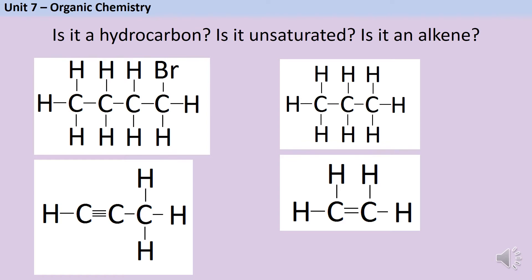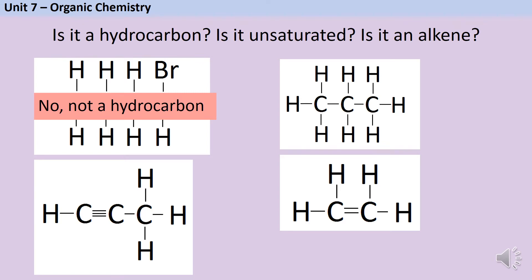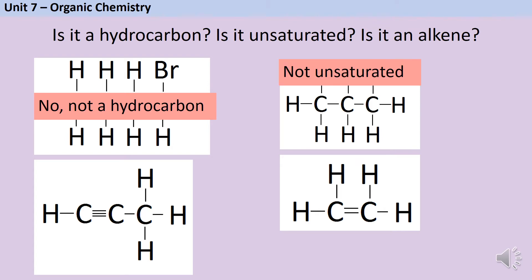Let's make sure you're happy identifying alkenes. For each of these four molecules ask yourself: is it a hydrocarbon, is it unsaturated, and if it is both of these things, is it an alkene? The first molecule is not a hydrocarbon because it contains bromine. The second is a hydrocarbon but is saturated. The third has a triple bond rather than a double bond. The fourth is a hydrocarbon, it is unsaturated, and it is an alkene — this is ethene.